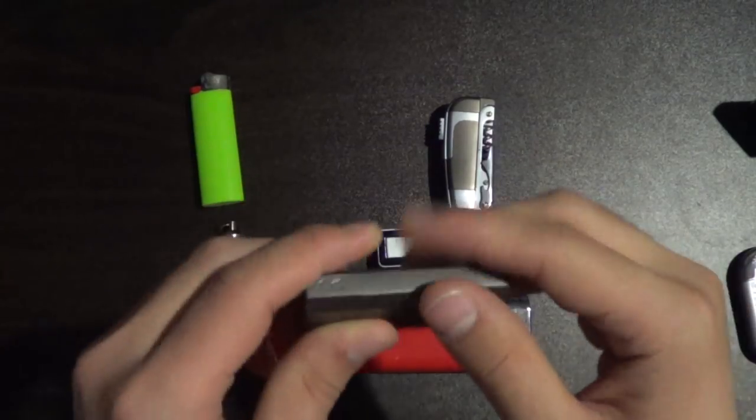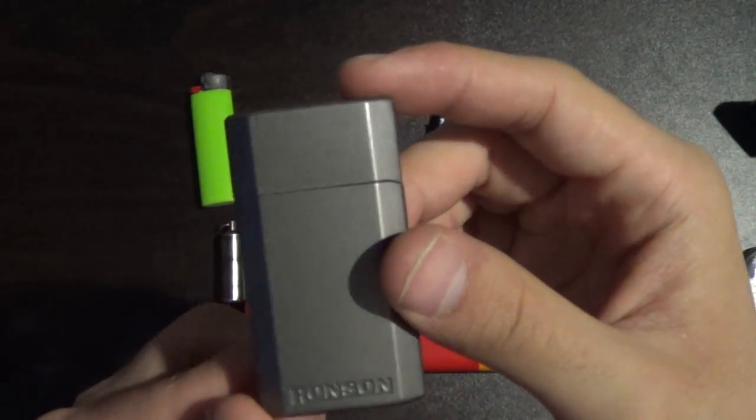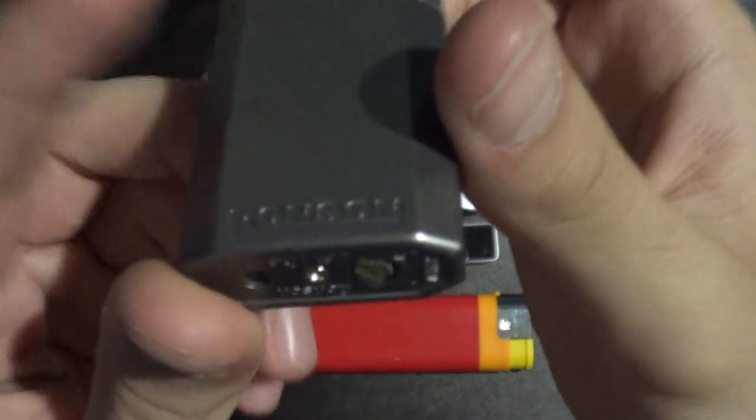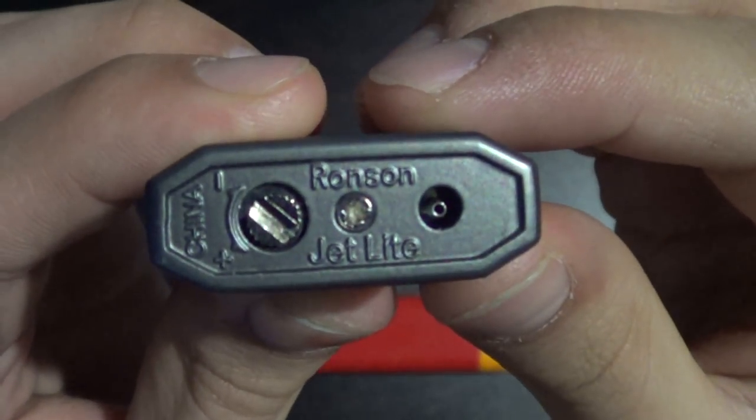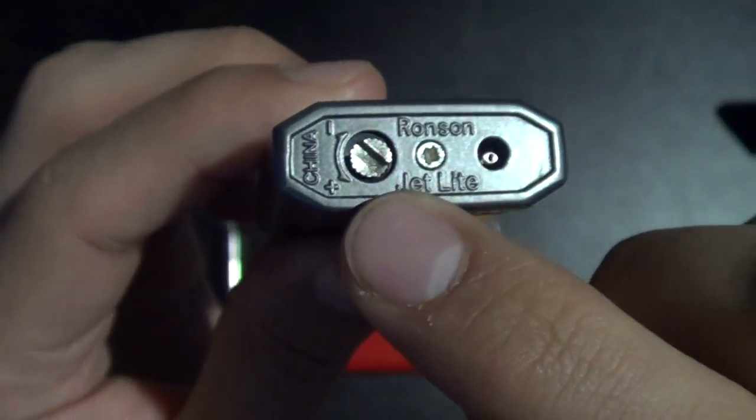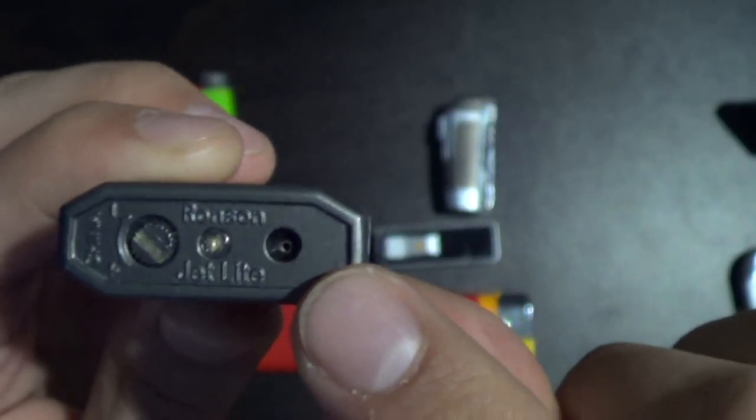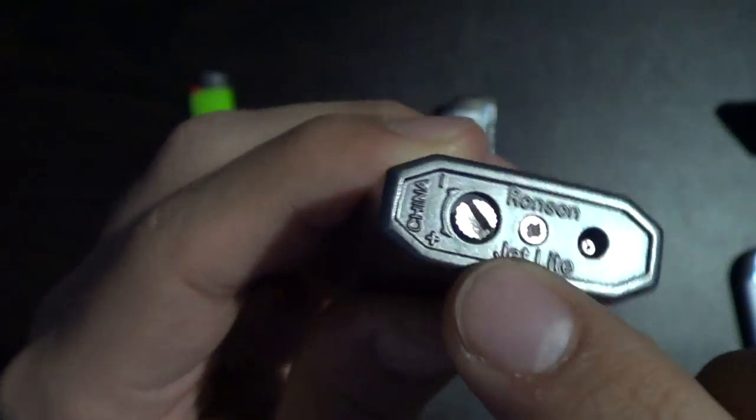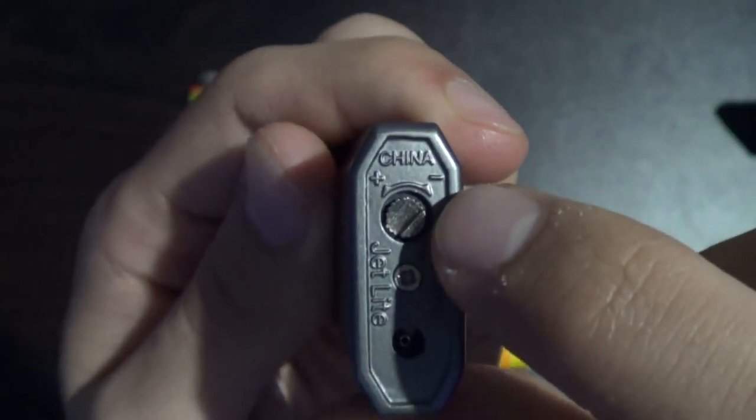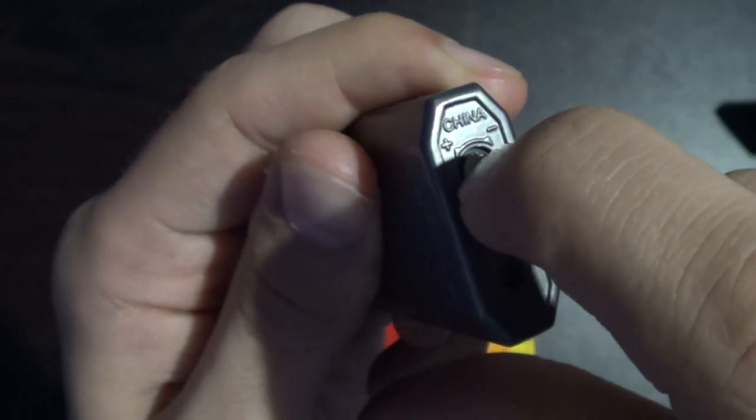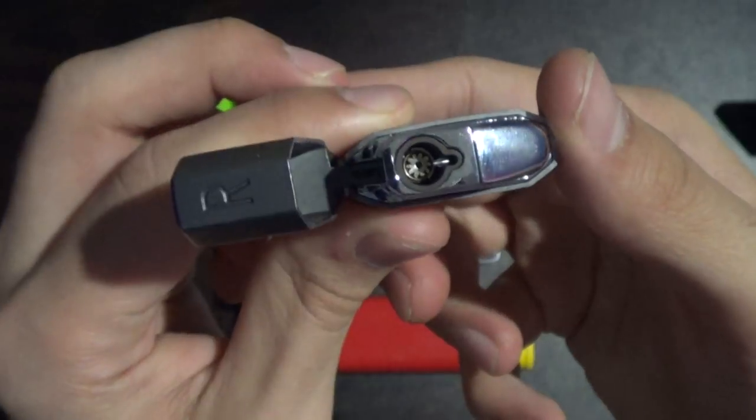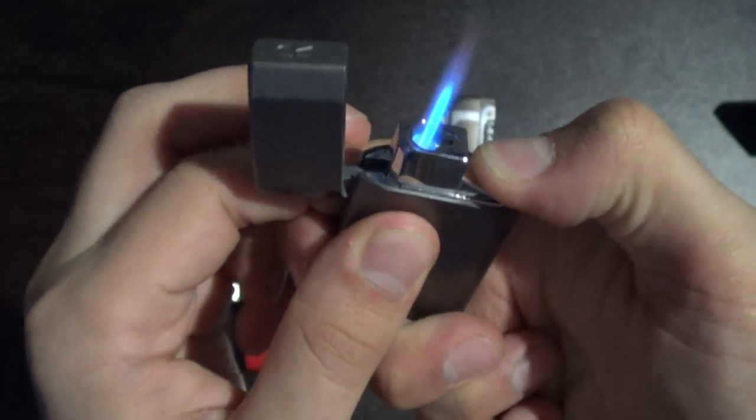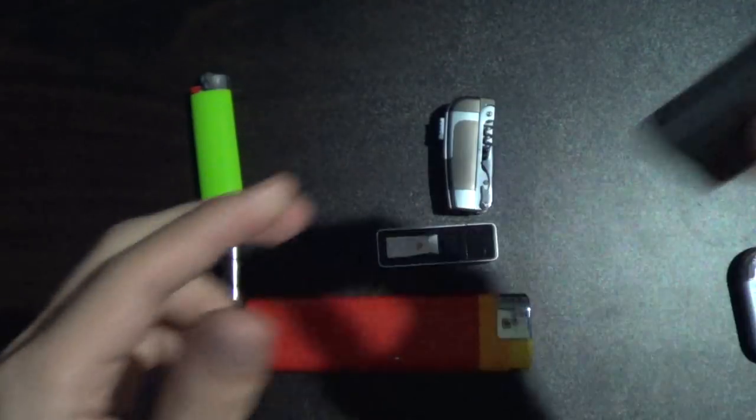So next we'll do this one. It looks very industrial, and this is a Ronson, a butane lighter, a Ronson jet light. And what I like about this one is that the filling port is separate from the flame adjustment. And the flame adjustment, you can actually do it with your fingernail, if you have a good fingernail, or a quarter or something. And this one is just a simple single jet butane lighter. Pretty nice one.